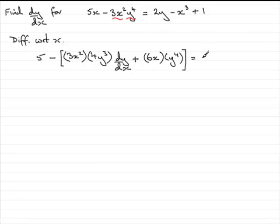Equals, now we differentiate 2y with respect to x, so we differentiate it with respect to y and get 2, but don't forget to put dy/dx on the end. Next term, differentiate -x³, we get -3x². And then differentiating 1 with respect to x, well that's going to be 0.